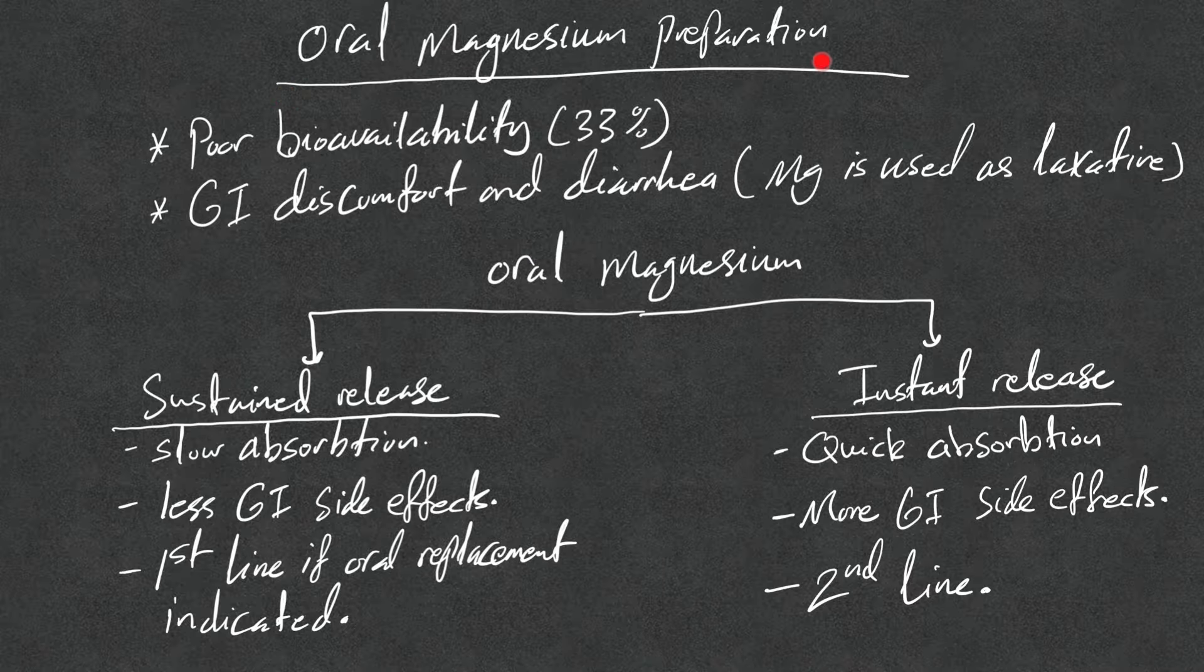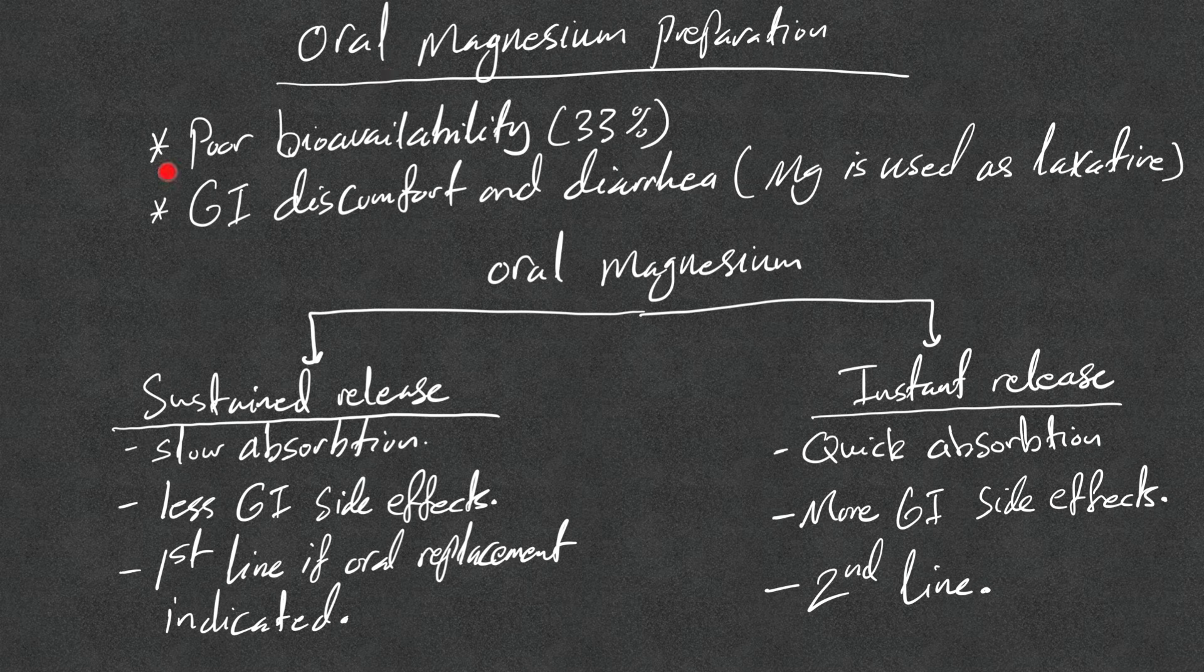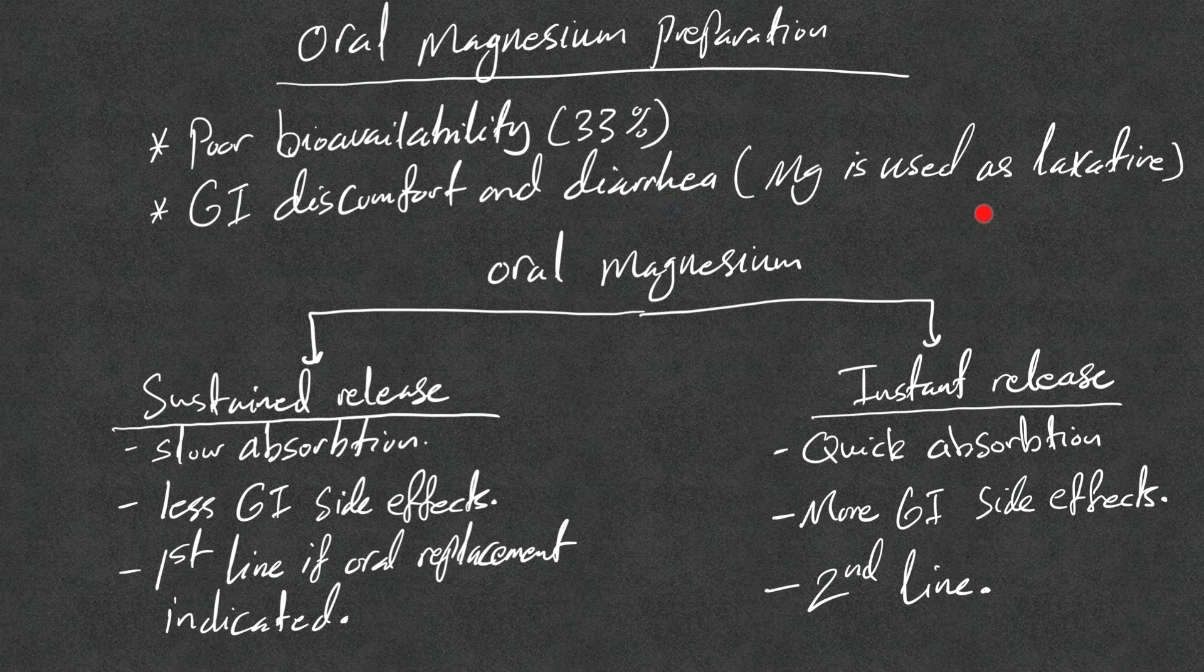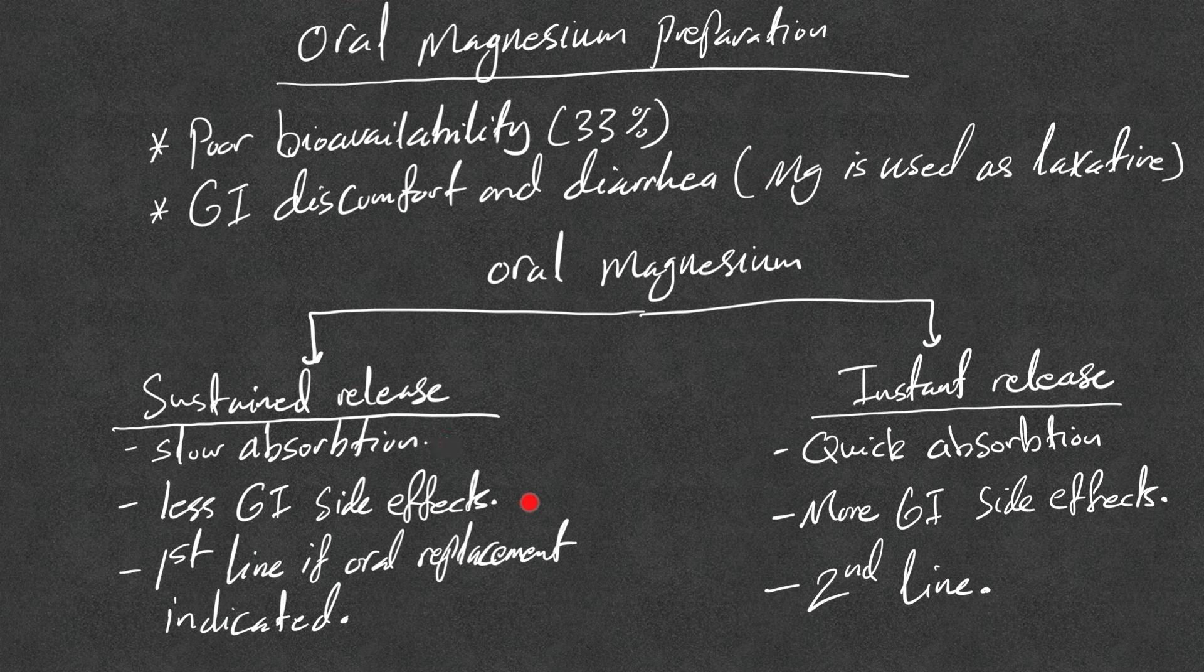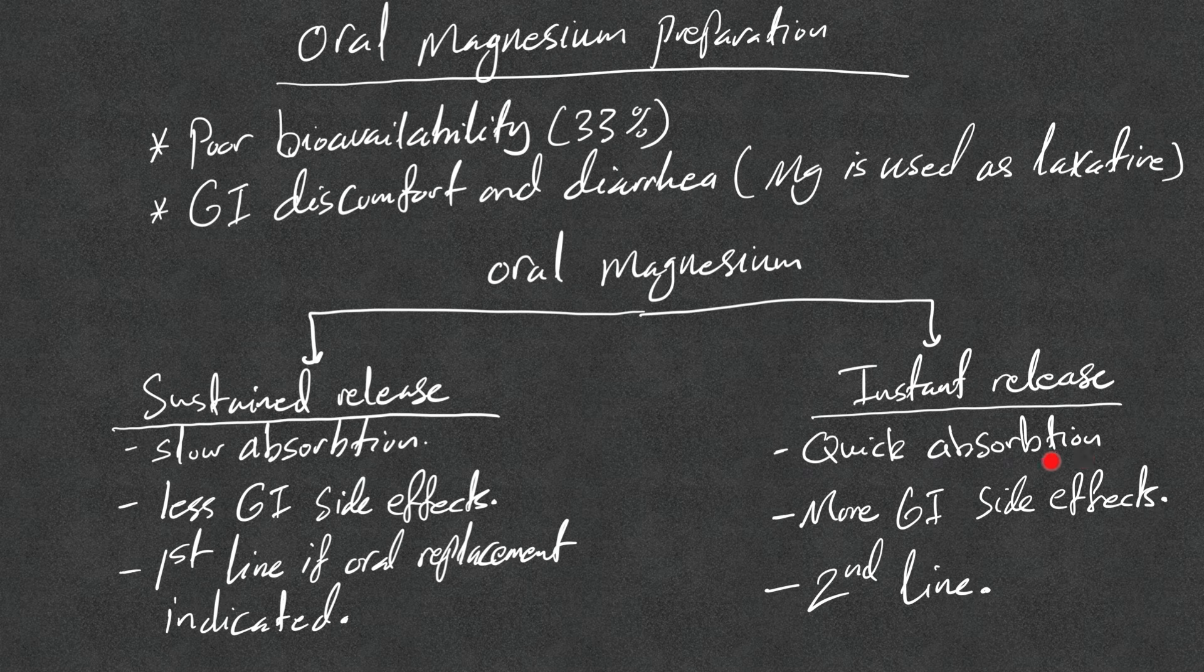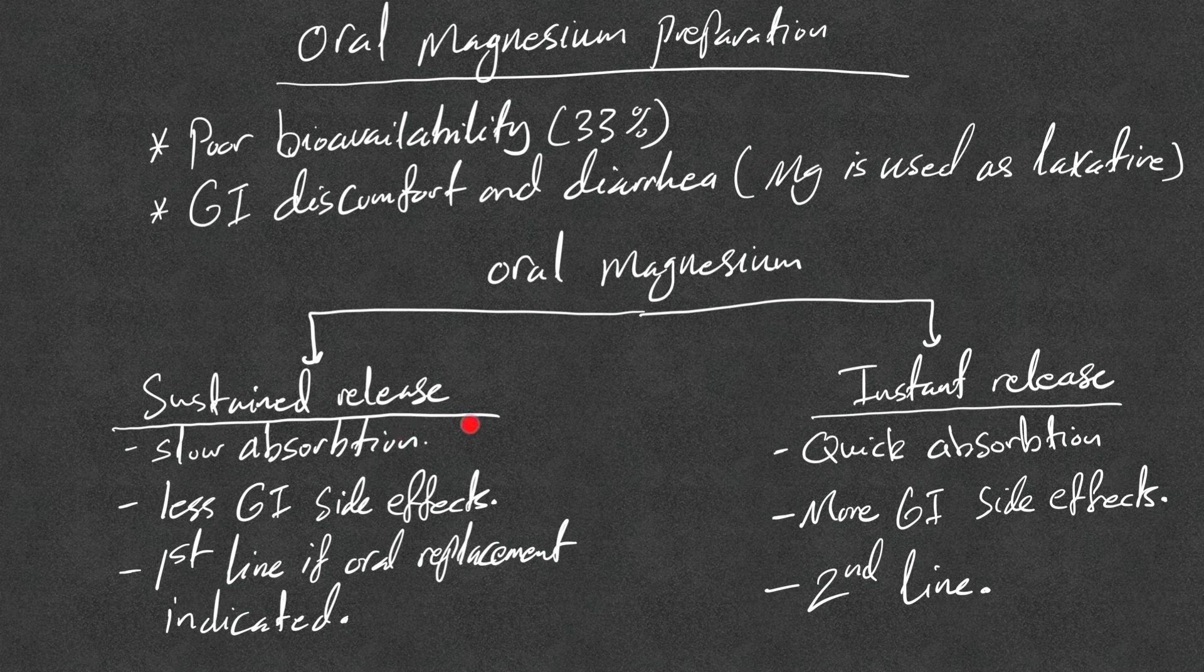Let's go over the available oral magnesium preparation in the USA. These oral preparations have poor bioavailability, estimated to be around 33%. Their main side effect is GI discomfort and diarrhea. Remember, magnesium is used sometimes as laxatives. Oral magnesium supplements can be either sustained release or instant release. Sustained release means slow absorption, less GI side effects and diarrhea, and these are first line if oral replacements are indicated. Instant release means quick absorption, more GI side effects, and they're considered second line. Always think of using sustained release first.